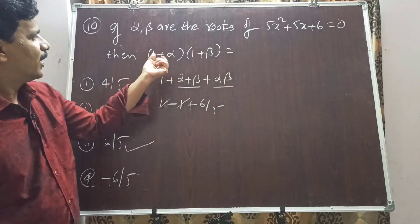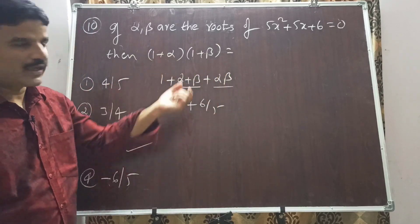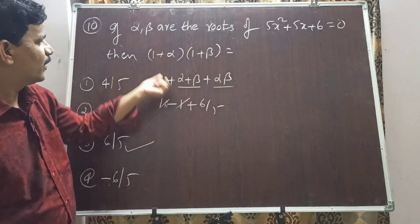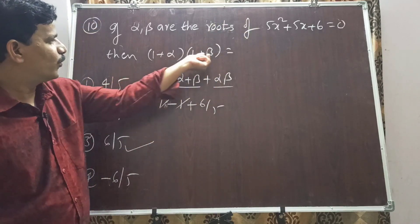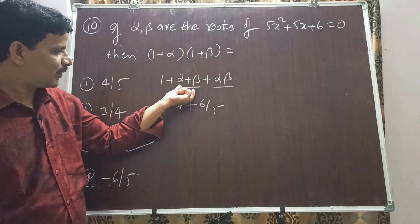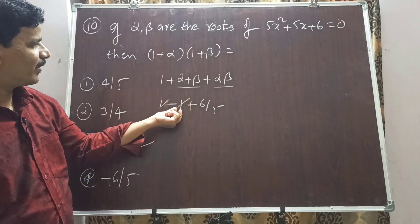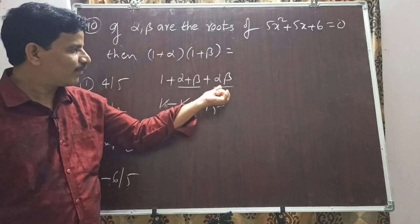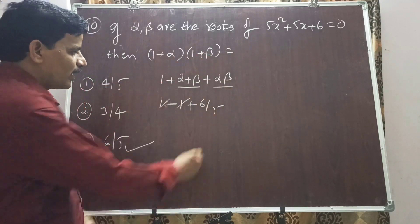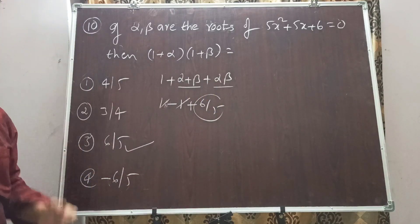To summarize: expand (1+alpha)(1+beta) = 1 + alpha + beta + alpha·beta. Sum of roots = -5/5 = -1, product of roots = 6/5. Therefore 1 + (-1) + 6/5 = 6/5. Option 3 is the right answer.